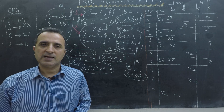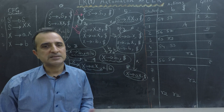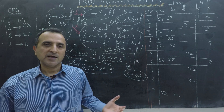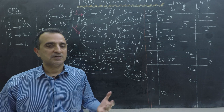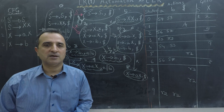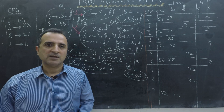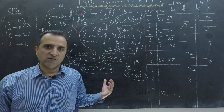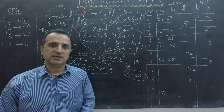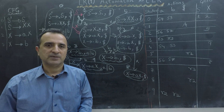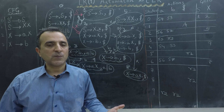LALR parsing table has significantly fewer entries as compared to CLR parsing table. In fact, LALR parsing table has the same size as SLR parsing table. So that's why LALR is much faster as compared to CLR. However, CLR accepts a larger number of grammars, whereas it's possible that while converting this parsing table from CLR to LALR, we have shift-reduce or reduce-reduce conflict. So this grammar might be CLR grammar but might not be LALR grammar.